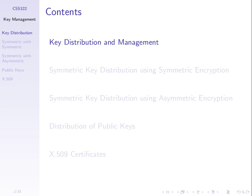One way to distribute a key — and by distribute I usually mean across a communications network — is to encrypt it. But that leads to a recursive problem: if I need to encrypt the key with another key, how do I distribute that original key? The other way to distribute keys is to use public key cryptography, since one of the two keys can be public. We'll see how to distribute secret keys using symmetric key encryption, and then how to distribute symmetric keys using asymmetric or public key encryption.